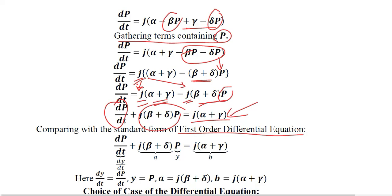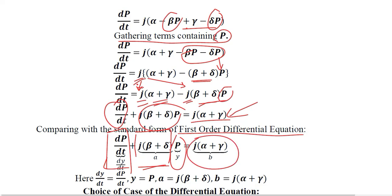The constant term — containing neither P nor t — must not be forgotten. This rearrangement gives us a form adjacent to the standard form of the first-order differential equation: dp/dt corresponds to dy/dt, the coefficient corresponds to constant a, P corresponds to variable y, and the constant term corresponds to small b in the standard form. We can now extract the values by comparing with the standard form.